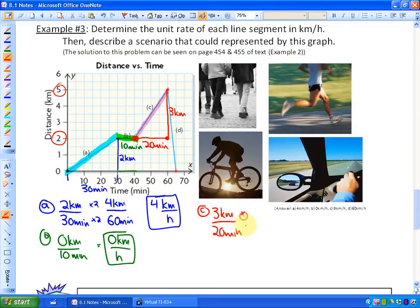So that would be three kilometers in 20 minutes. And since we need per hour we would times this by three in order to get the time up to 60 minutes. So that would be nine kilometers in 60 minutes, or in other words nine kilometers per hour.